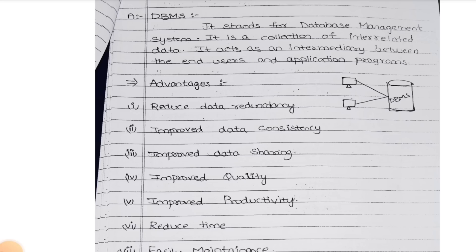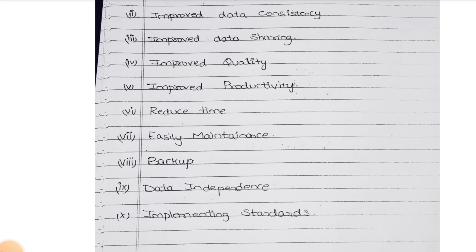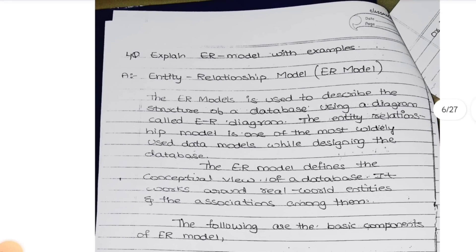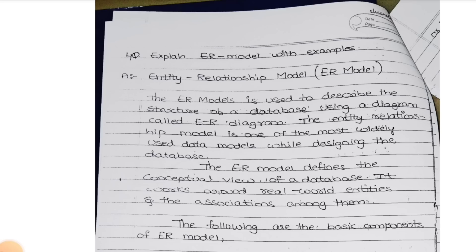That is called data redundancy - it reduces data redundancy when you are having DBMS. Data consistency means quality of data - how much data is required to our organization. Next, data sharing - it will share the documents. Quality, productivity - it will reduce the time when you are having a DBMS. Easy maintenance, backup - whatever things we have discussed just now, you can include all those points over here. It will share documents from one computer to another computer.